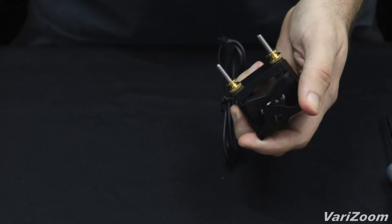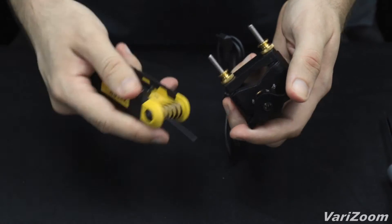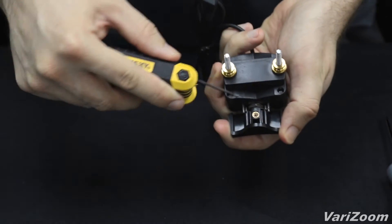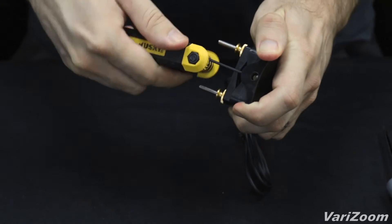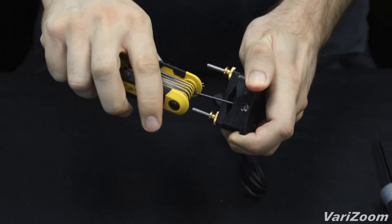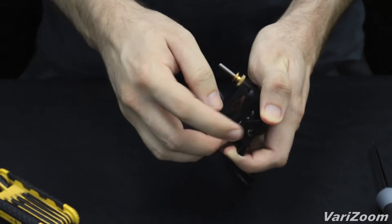What we're going to do is we're going to take an Allen key set, like this one here, and I'm going to go to the bottom. Here's the set screw. I'm going to loosen that up. What happens is when you loosen that up, you're actually loosening the rocker from the potentiometer.